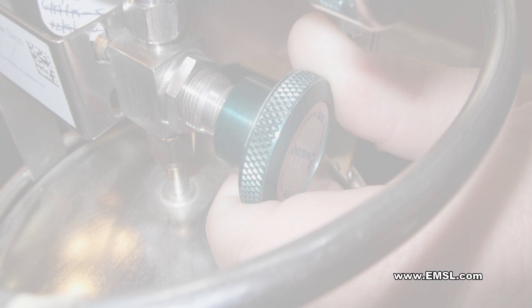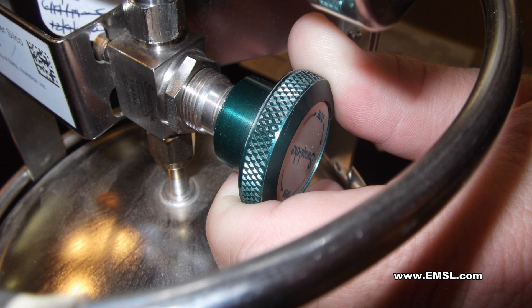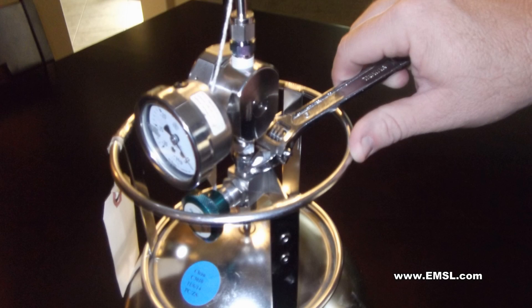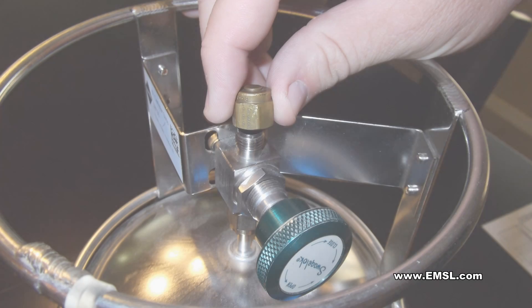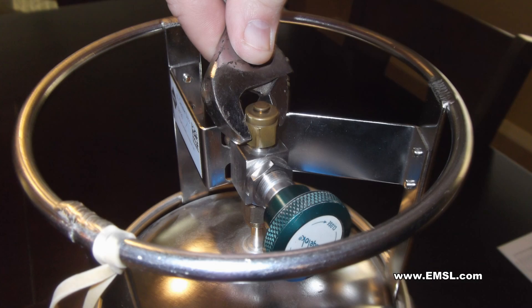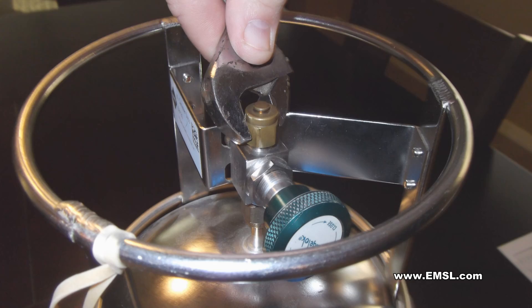After the sampling time has elapsed, stop sampling by closing the valve on the canister by turning the knob clockwise. Remove the regulator using the 9/16-inch wrench and place the 1/4-inch brass cap back on the canister with the wrench until it is snug, again being careful not to cross-thread the nut.